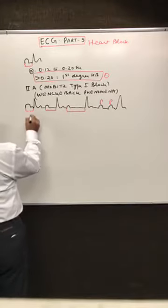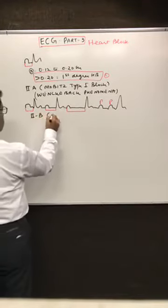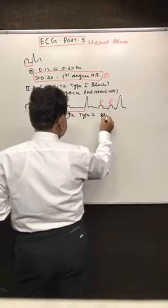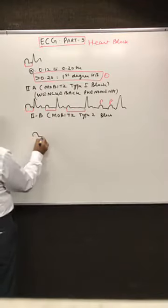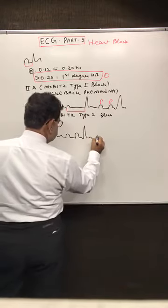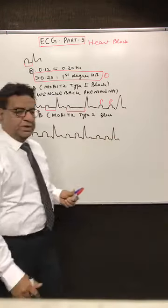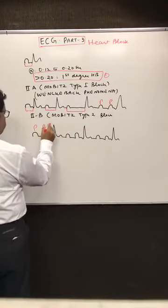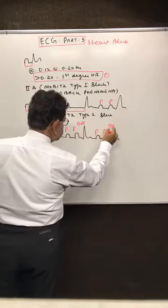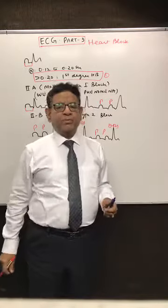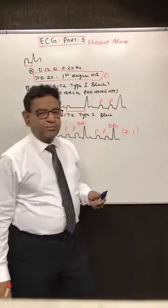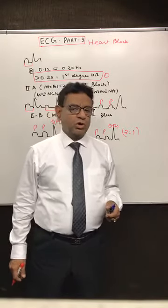Now we talk about Mobitz type 2, also known as 2B block. In the recording, we see P wave, P wave, then QRS complex — P, P, QRS; P, P, QRS. So there are a fixed number of P waves followed by one QRS. In this recording we can say comfortably: you are getting a 2-to-1 block — two P waves followed by one QRS. This is the so-called Mobitz type 2 or 2B block.